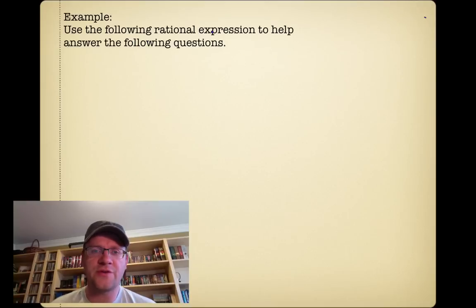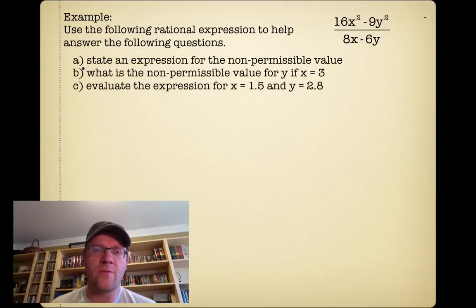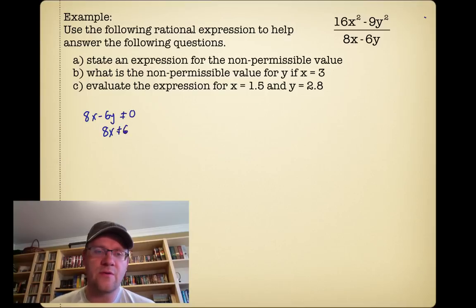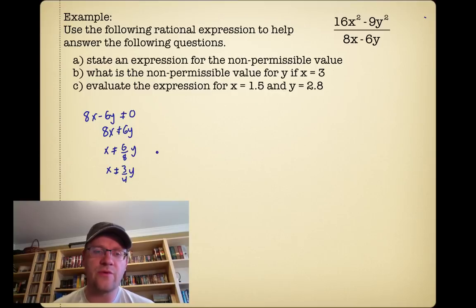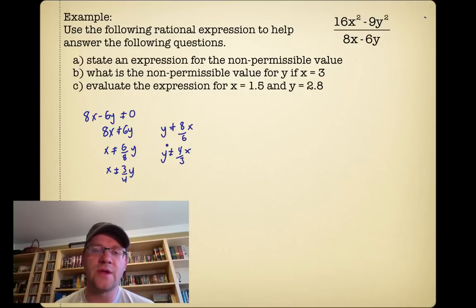Our final example uses the rational expression 16x squared minus 9y squared over (8x minus 6y). Part A asks us to state an expression for the non-permissible value. We know 8x minus 6y cannot equal zero, so 8x cannot equal 6y. We can solve for x: x cannot equal three-quarters y. Or solving for y: y cannot equal four-thirds x. Because there are two variables in the denominator, we have two different non-permissible values.